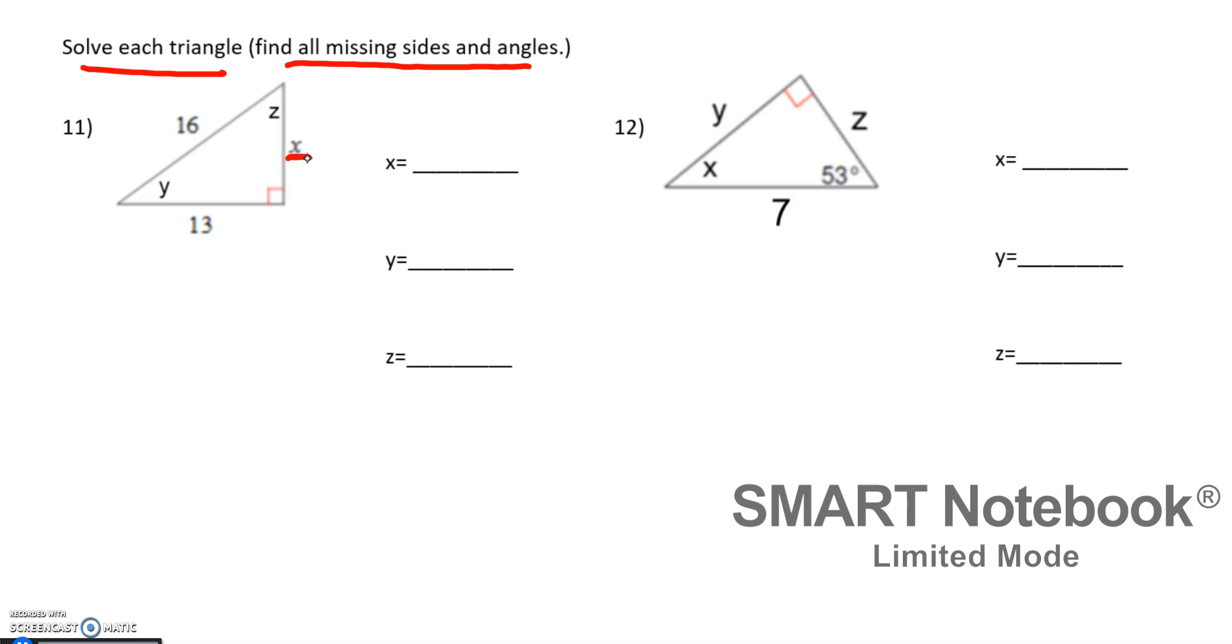We want to keep our answers exact if possible. So if we did 13 squared plus x squared equals 16 squared, we would get 169 plus x squared equals 256. Subtract over the 169, we would get that x squared equals 87. If I take the square root of both sides, we technically have two answers, plus or minus 87. But because this is somewhat of a geometry topic, we're not dealing with negative side lengths. So my answer would just be root 87. Let's not round it. Let's leave it exact as root 87.